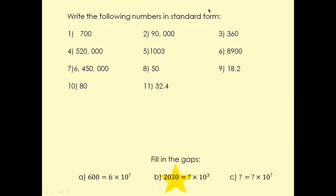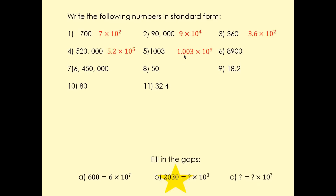The answers: the first one is 7 × 10². That's 9 × 10⁴. For the next one, 3.6 — you can write 3.6 or 3.60, but normally we don't write trailing zeros, though it's still correct either way. Good practice: if zeros are at the end, we don't write them. Then it's 5.2 × 10⁵. If zeros are in the middle of the number, we must include them. So that's 6.45 × 10⁶.